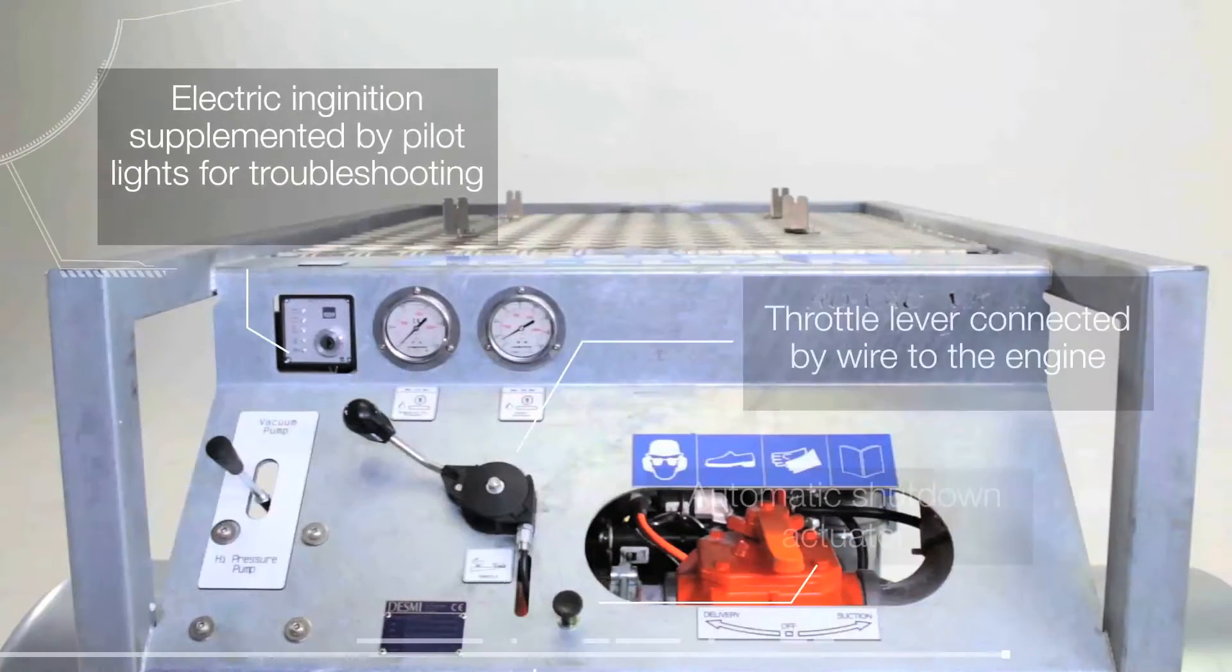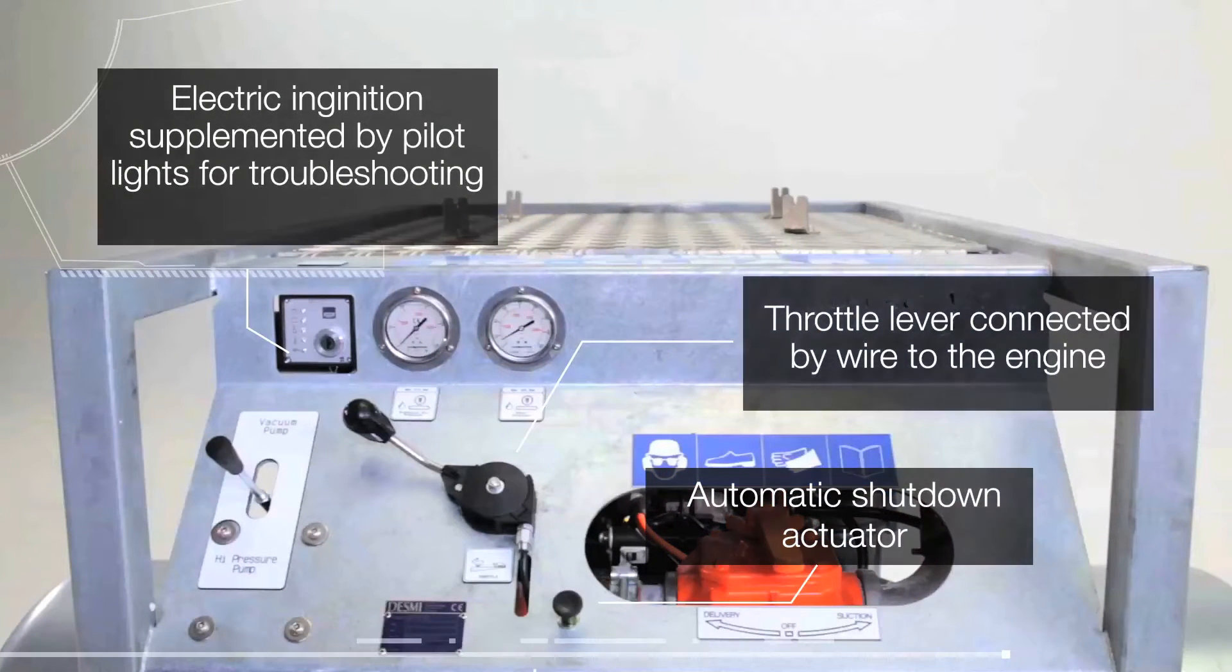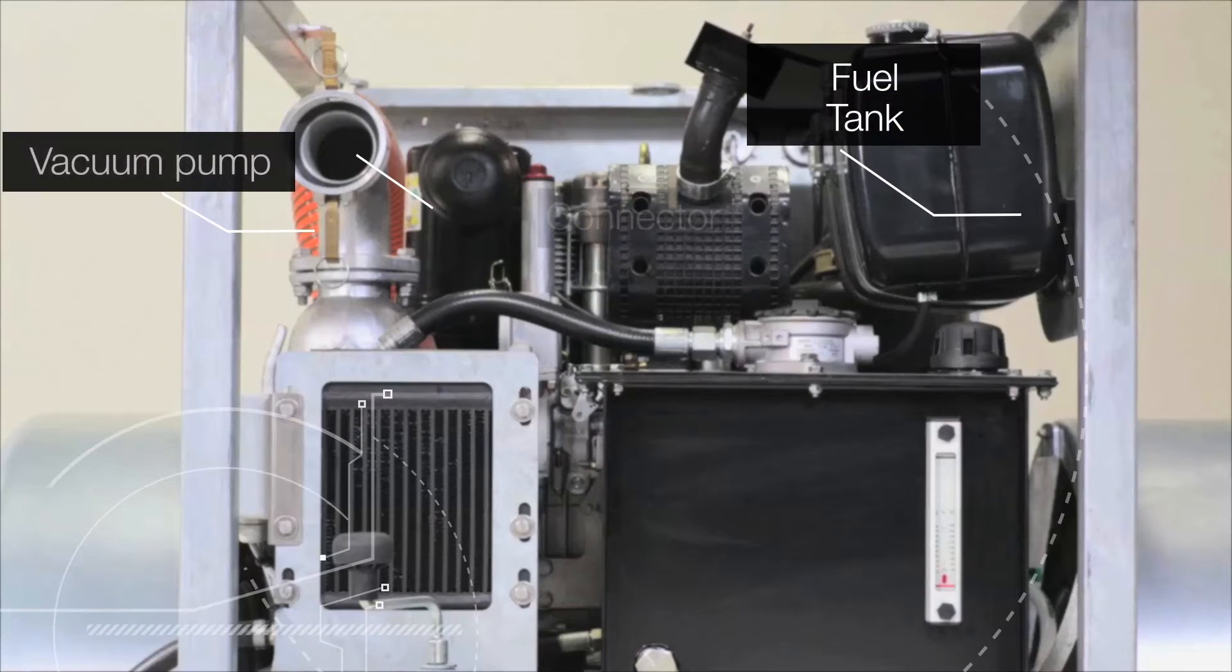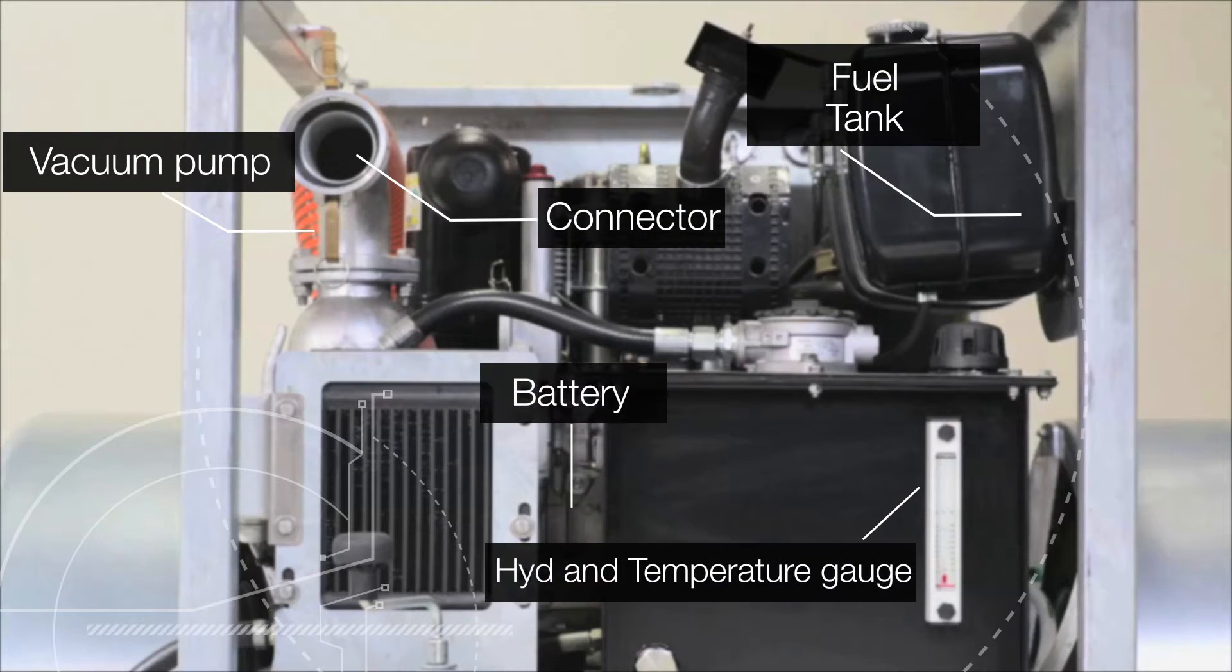The front panel is fitted with hydraulic gauges for the vacuum pump and for the high-pressure water pump, speed control lever, and stop button.